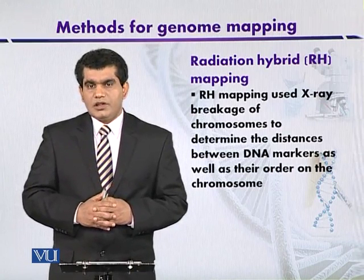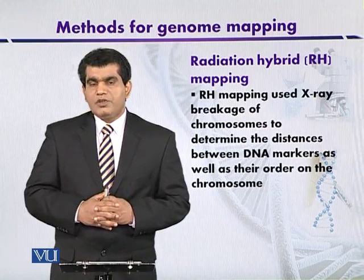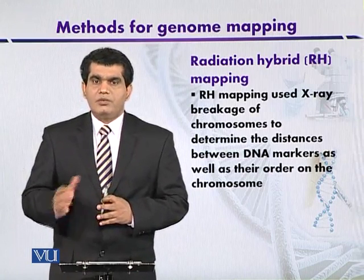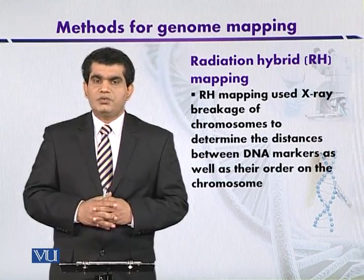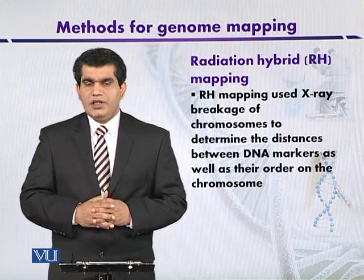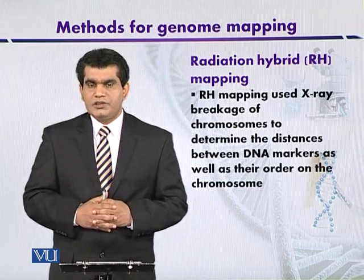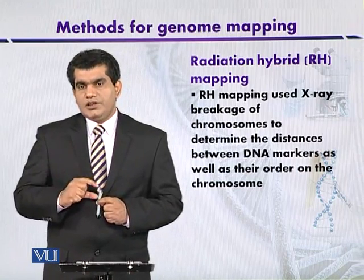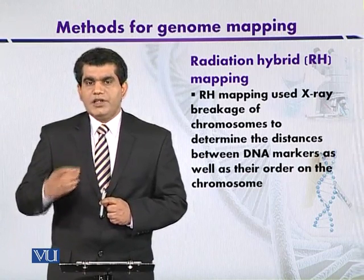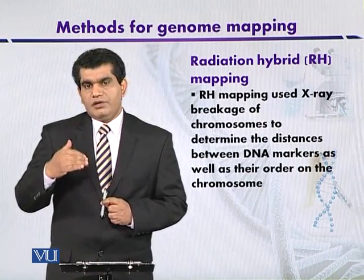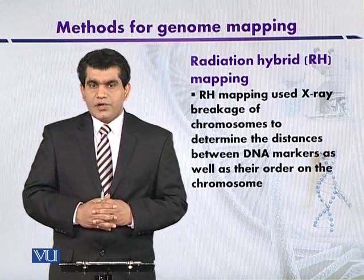By using X-ray radiation to cause random breakage of the DNA, we can find out the locations of different genes on the chromosome. With the passage of time, this technique was modified through the 1980s and was used with known DNA sequences called Sequence Tagged Sites, or STS. Such sites were selected, and the randomly broken DNA was amplified and detected on agarose gel electrophoresis.